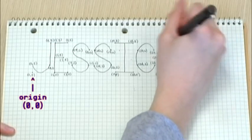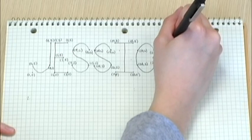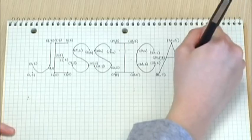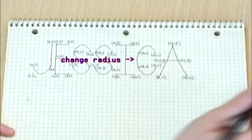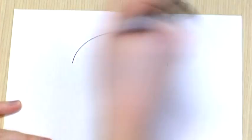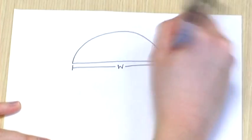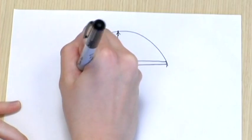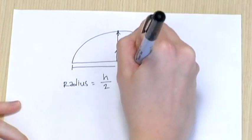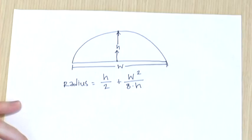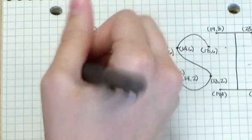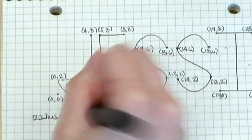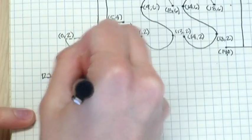Next, define your origin and map out major coordinate locations on each letter of your name. These points will be at the end points of the letters, or at points where an arc will begin, end, or change radius. Lastly, we'll need to calculate the radii of the arcs in our name. This can be accomplished using a simple formula where the radius equals the height of the arc divided by 2, plus the width squared divided by 8 times the height. For example, for the letter J with a width of 4 and a height of 2, we get an arc radius of 2.